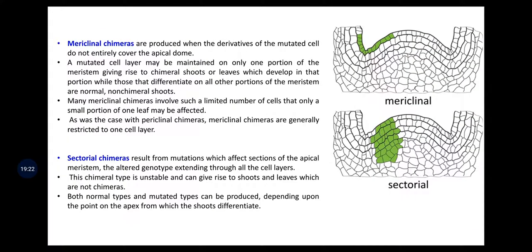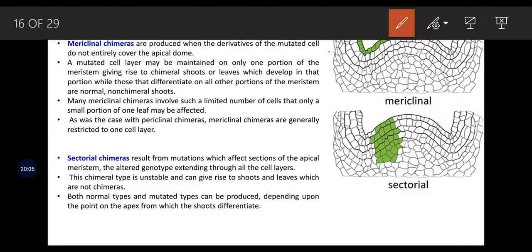Next is mericlinal chimera. These are produced when the derivatives of the mutated cells do not entirely cover the apical dome. A mutated cell layer may be maintained on only one portion of the meristem, giving rise to chimeric shoots or leaves while those on all other portions are normal, non-chimeric. Many mericlinal chimeras involve such a limited number of cells that only a small portion of one leaf may be affected. In photographs, only a very small bunch of adjacent cells show the chimeric condition.